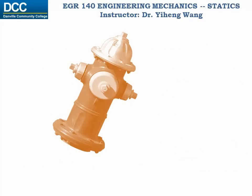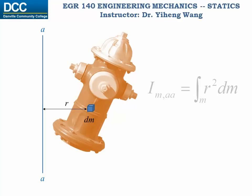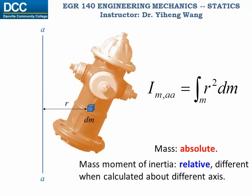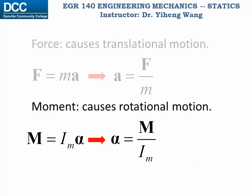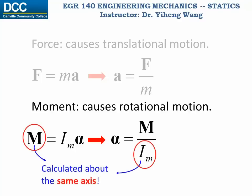How is it defined? Just like a moment caused by a force, the moment of inertia is always calculated about an axis, say axis AA. On the rigid body, for an arbitrary differential element with mass dm, we can find the perpendicular distance between it and the axis, r. The mass moment of inertia about this particular axis AA is the integration of r squared times dm, integrated throughout the entire body. So unlike mass, which is absolute, mass moment of inertia is relative — it is different when calculated about different axes. Needless to say, in the moment equation, these two must be calculated about the same axis.